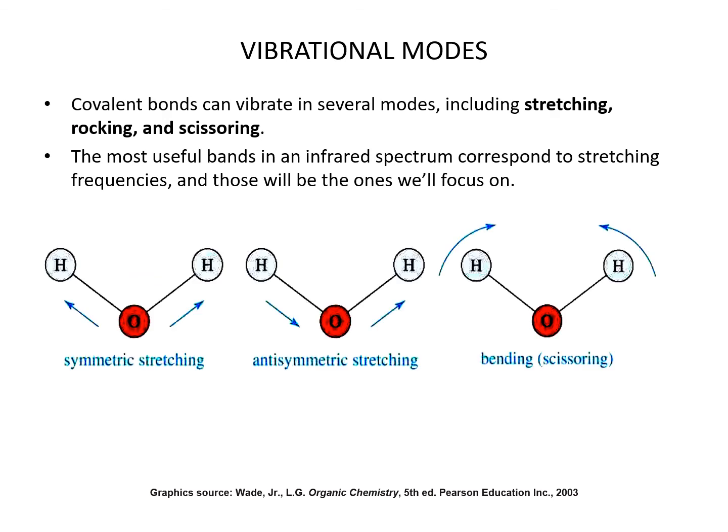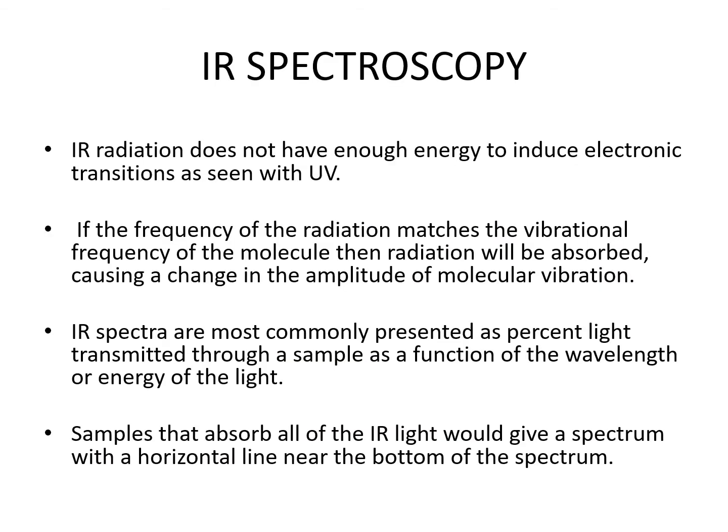The vibration modes: covalent bonds can vibrate in several modes, including stretching, rocking, and scissoring. The most useful bands in an infrared spectrum correspond to stretching frequencies, and those will be the ones we focus on. IR radiation does not have enough energy to induce electronic transitions as seen with UV. If the frequency of the radiation matches the vibrational frequency of the molecule, then radiation will be absorbed, causing a change in the amplitude of molecular vibration.